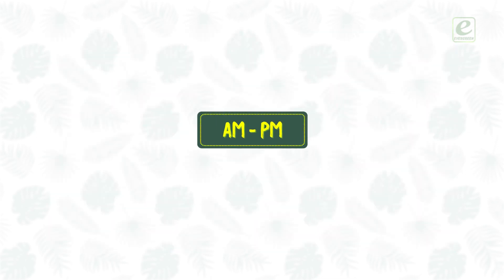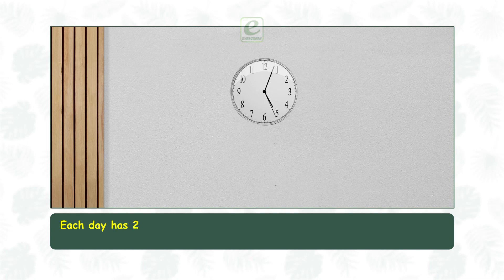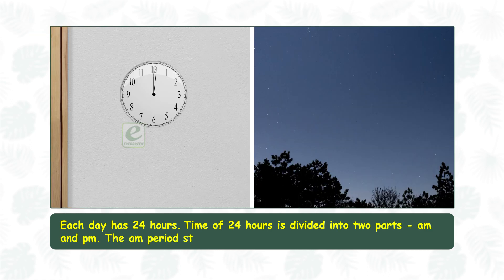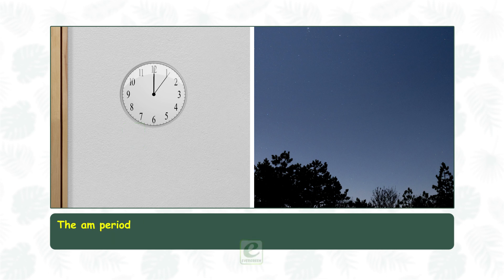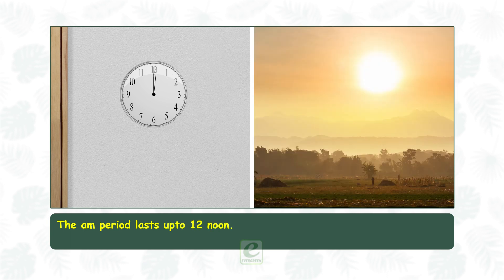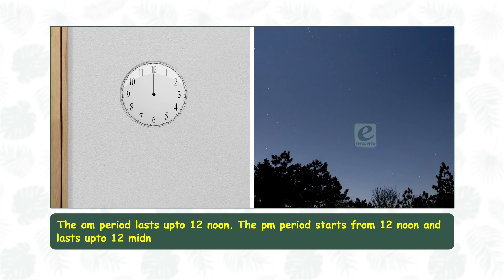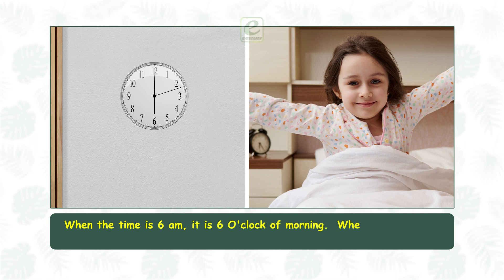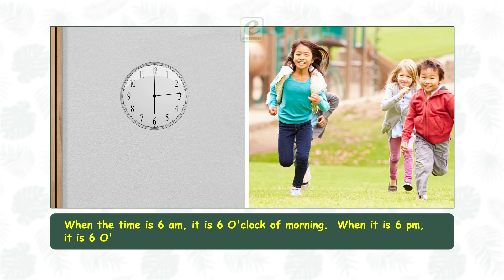A.M. and P.M. Each day has 24 hours. The time of 24 hours is divided into two parts: A.M. and P.M. The A.M. period starts at 12 midnight and lasts up to 12 noon. The P.M. period starts from 12 noon and lasts up to 12 midnight. When the time is 6 a.m., it is 6 o'clock in the morning. When it is 6 p.m., it is 6 o'clock in the evening.